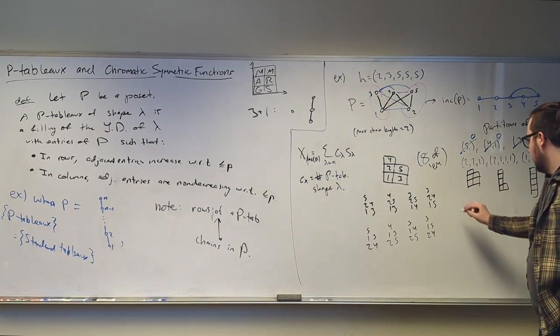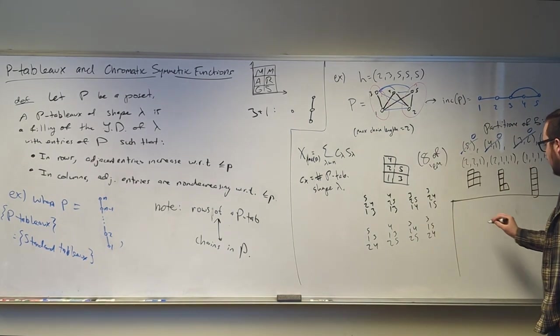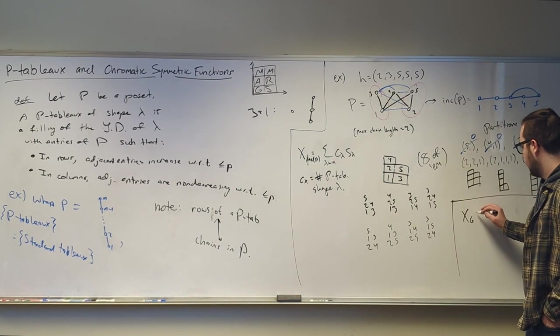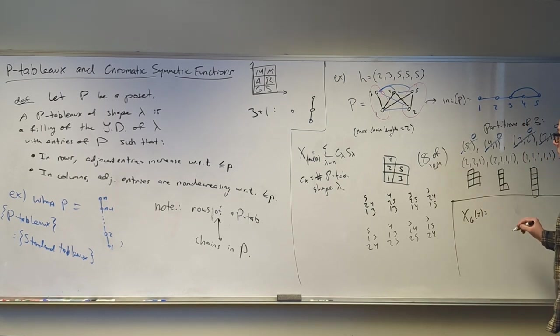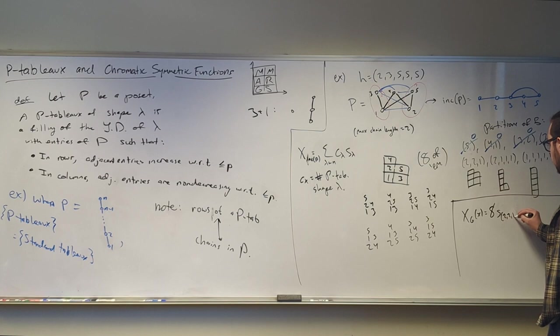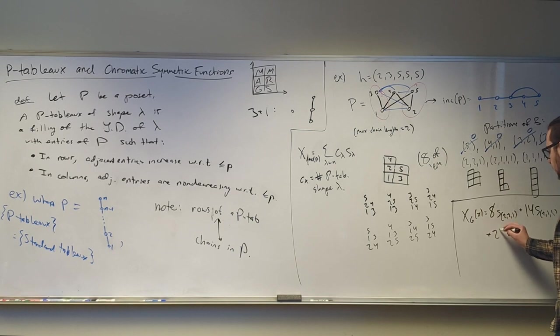So, there's 8 of them. And there's going to be 14 of these and 24 of these. So, at the end of the day, we're going to find that our chromatic symmetric function is 8 S2, 2, 1, 14 S2, 1, 1, 1, and 24 S1, 1, 1, 1, 1. So, it's Schur positive using this count.